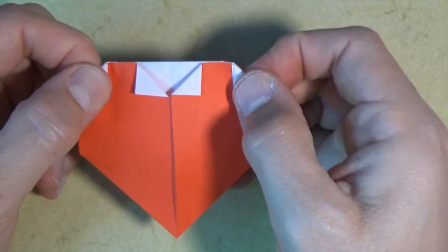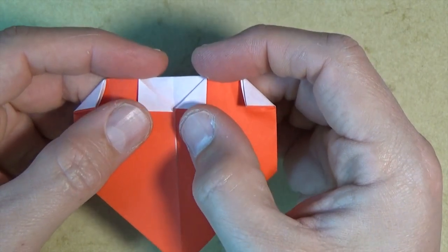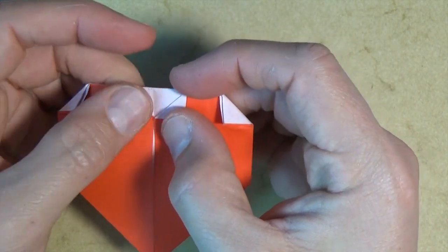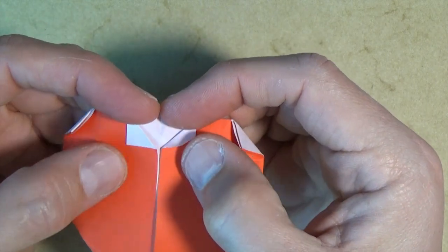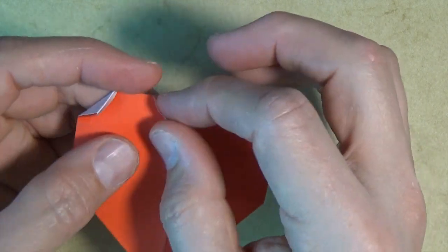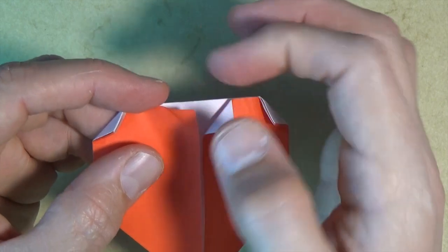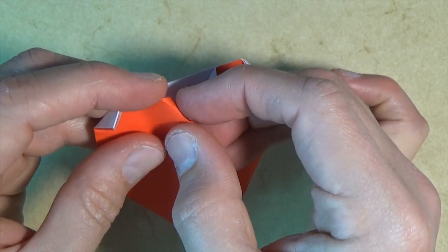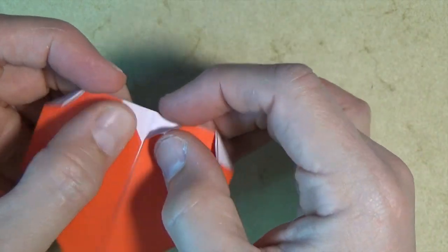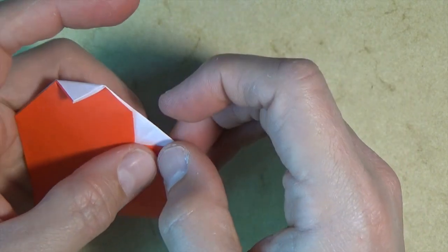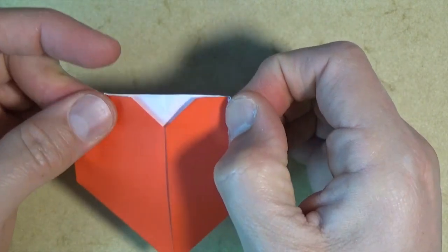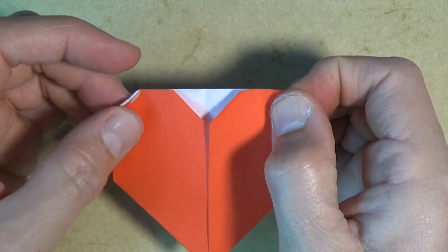Okay, and now let's reverse these two flaps right here. So unfold them and let's refold them tucking inside. Like this. Okay, now let's unfold these two side flaps. And let's reverse fold them.